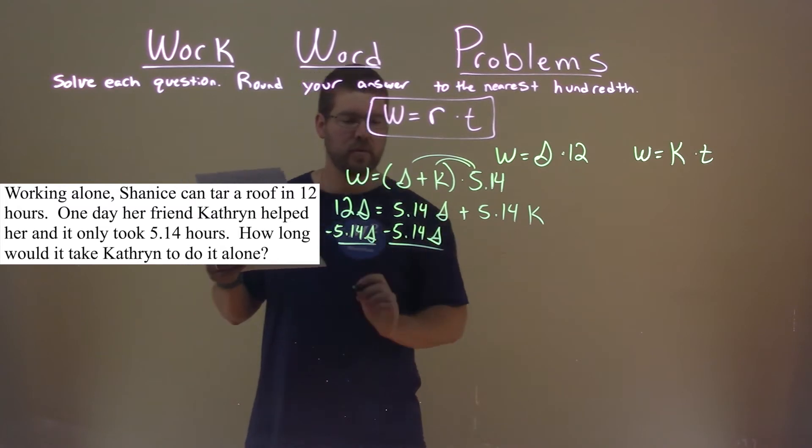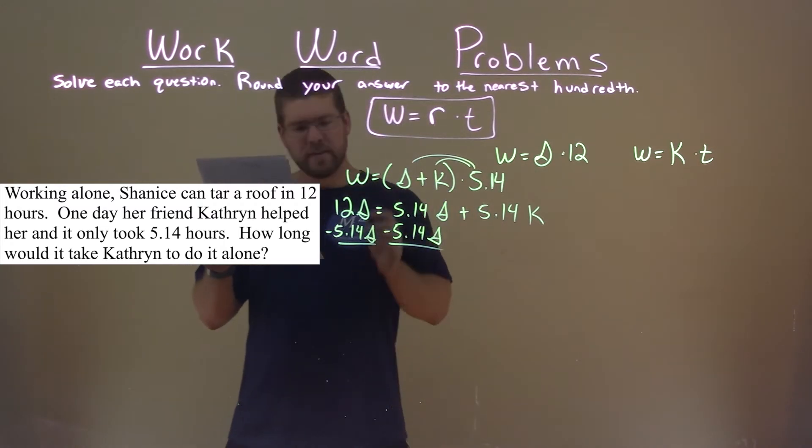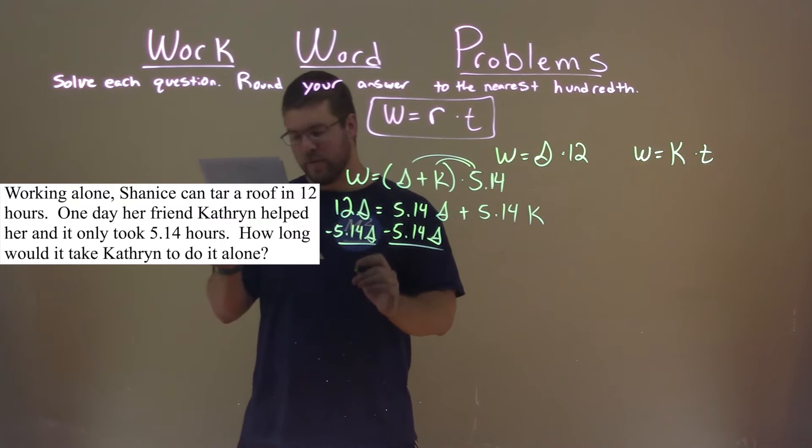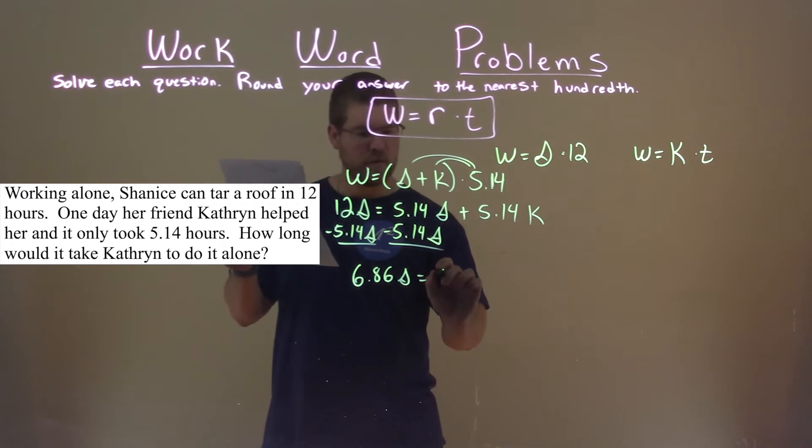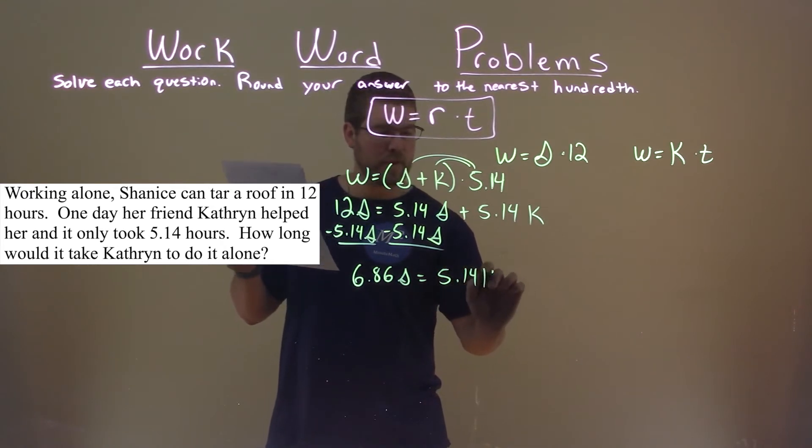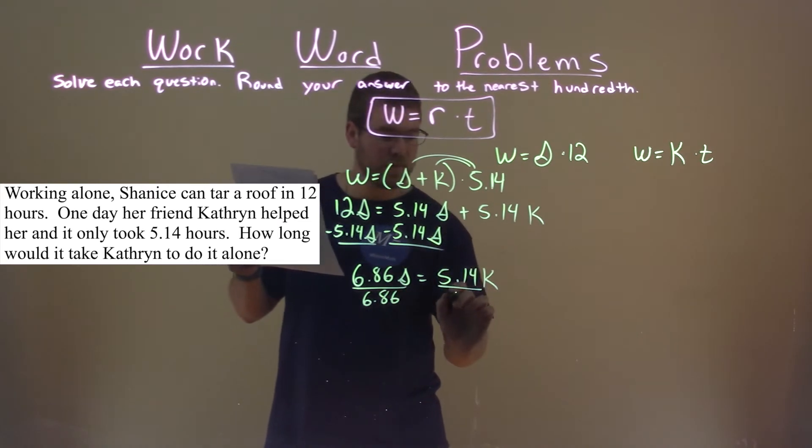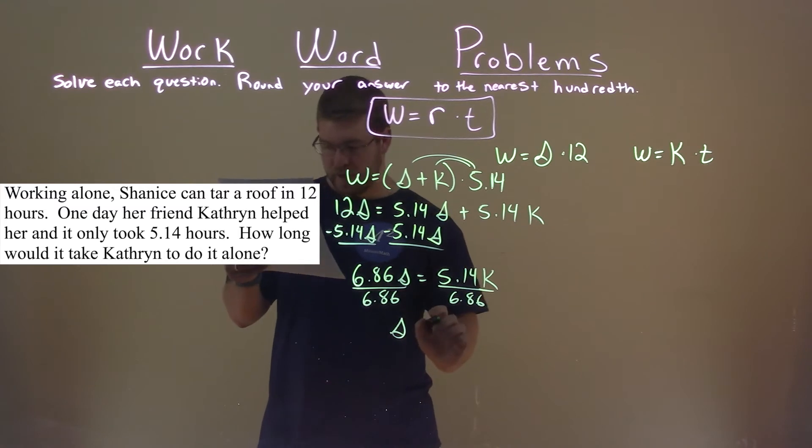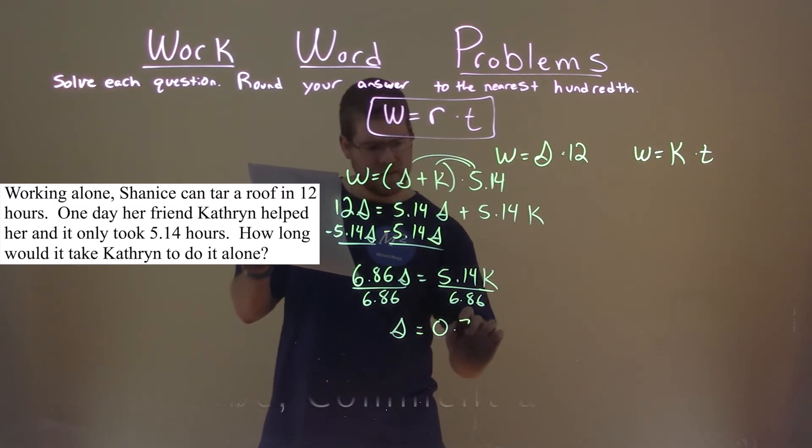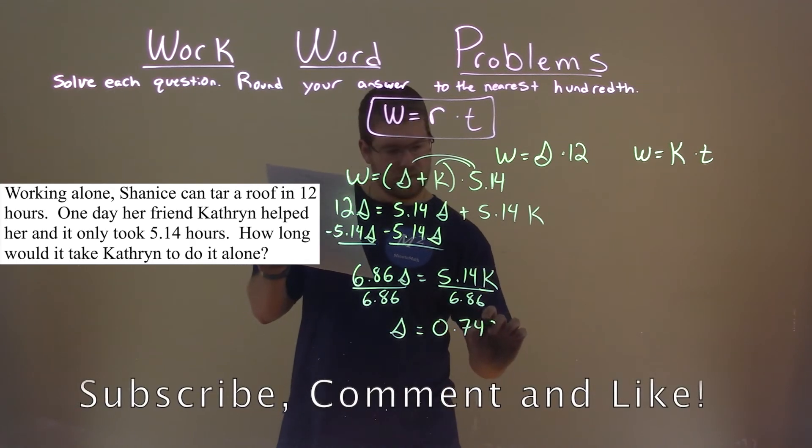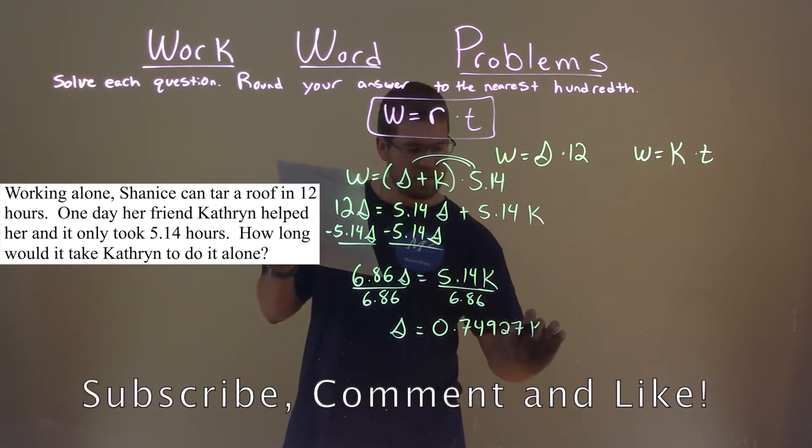12 minus 5.14s, subtracting here, is 6.86s, and that's equal to 5.14k. I'm going to divide 6.86 to both sides here, leaving me the variable s is equal to 0.74927k.